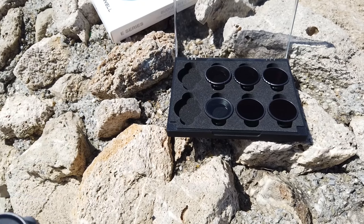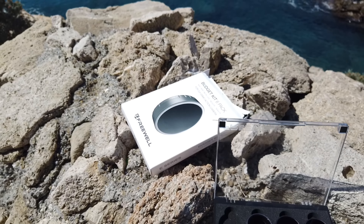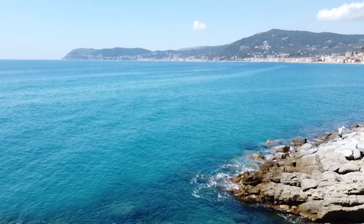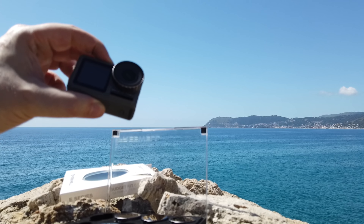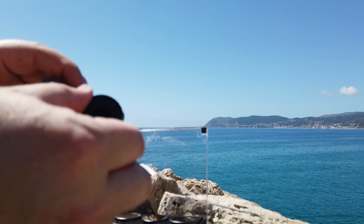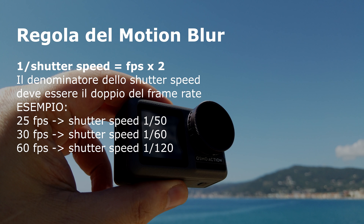In particolare vedremo come ottenere l'effetto Motion Blur, ovvero la sfocatura di movimento che rende le immagini più cinematografiche, evitando l'effetto di iper nitidezza tipico quando nelle giornate di luce si lasciano le impostazioni automatiche. Per ottenere questo effetto bisogna seguire una semplice regoletta che consiste nel raddoppiare il denominatore dello shutter speed rispetto agli fps.